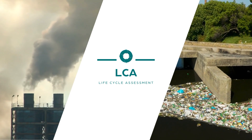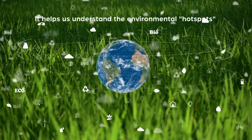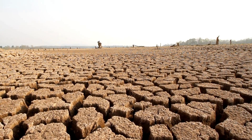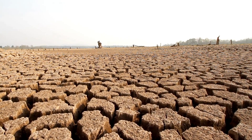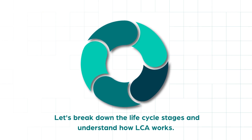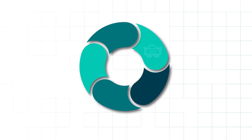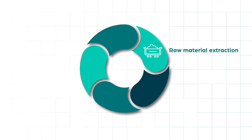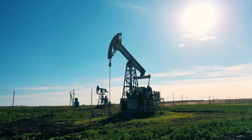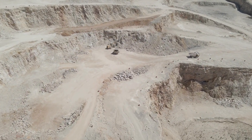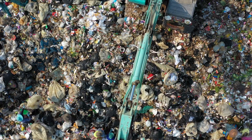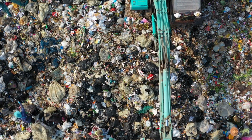LCA helps us understand the environmental hotspots — areas where a product's lifecycle has the most significant impact. Let's break down the lifecycle stages. Raw material extraction: this stage involves the extraction of raw materials needed for the product, including mining, logging, or farming, which can have environmental consequences such as habitat destruction and land degradation.